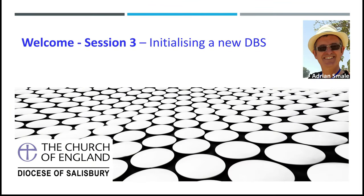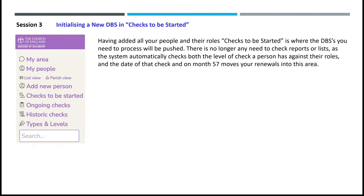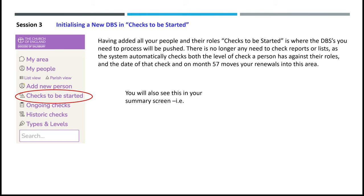Welcome to Session 3: initialising a new DBS check. Having added all your people and their roles, 'Checks to be Started' is where the DBSes you need to process will be pushed. There is no longer any need to check reports or lists, as the system automatically checks both the level of check a person has against their roles and the date of that check, and on month 57 moves your renewals into this area. You can access it by clicking here, and you will also see this in your summary screen, where you can access 'Checks to be Started' by clicking on that.